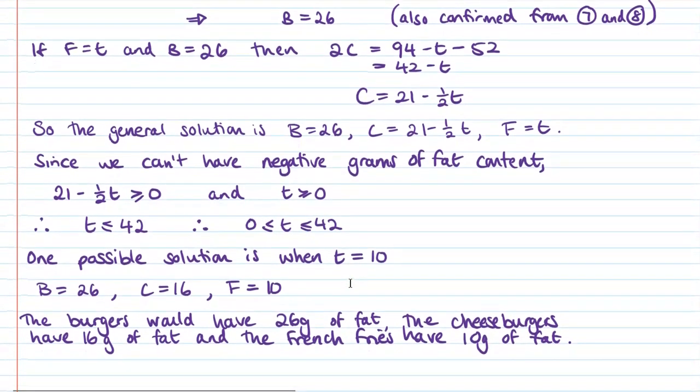Now we give an example of one possible solution. I've just picked T equals 10 because it looks like something that would be easy to work with. So in the case where T is 10, the Big Macs would be 26, the cheeseburgers would be 16, and the French fries would be 10 just by putting them into these three equations that we have up here as our general solution when T is 10. So then we write that as a sentence. The burgers would have 26 grams of fat, the cheeseburgers would have 16, and the French fries would have 10.